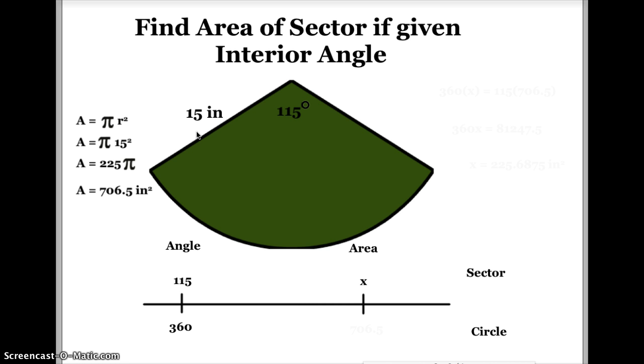And then if I take 225 times 3.14, I get 706.5 inches squared. So the area of the whole circle is going to be 706.5, and I'm going to use that information to help me find the area of the sector.